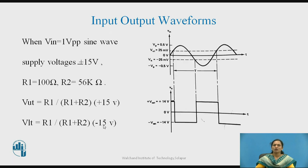The output waveform will look like this. If you put these values in, you will get the threshold point at approximately 26 millivolts.